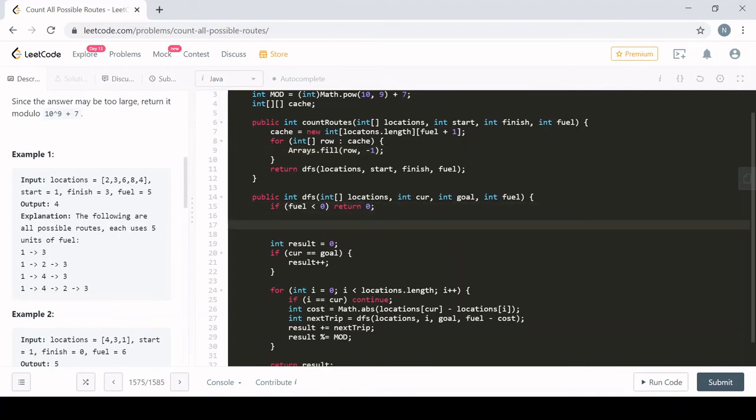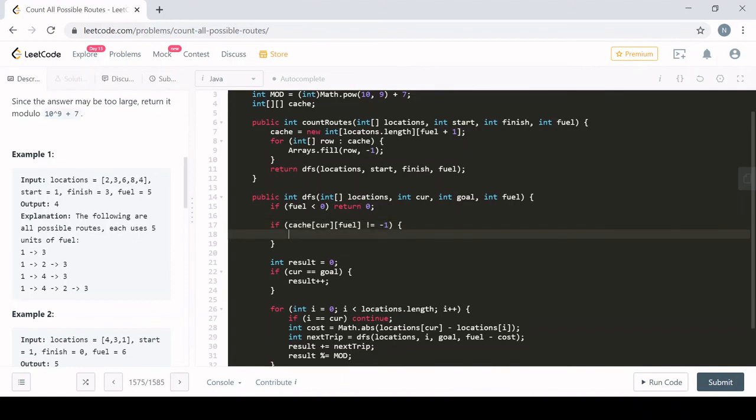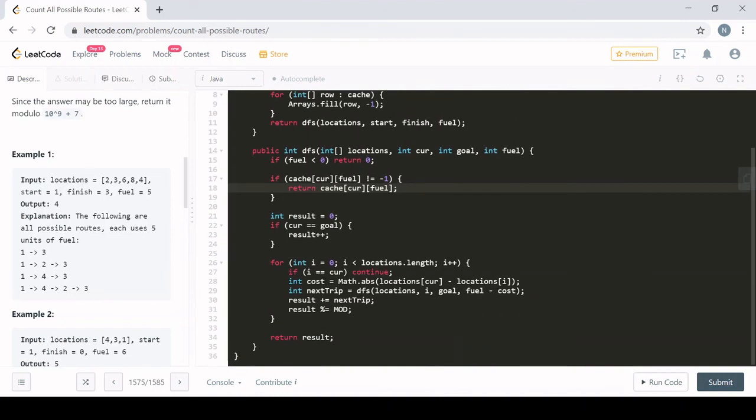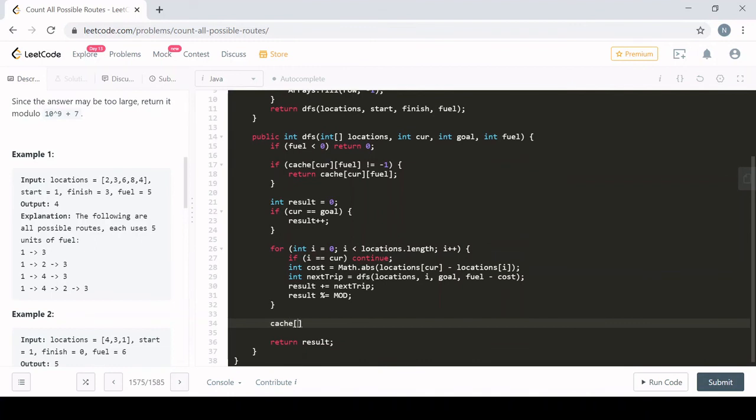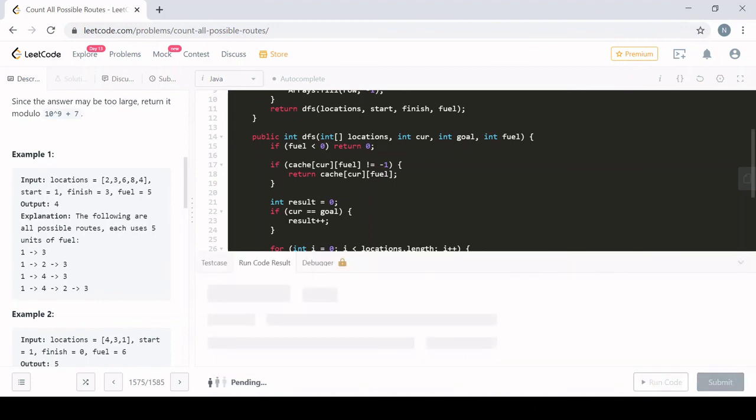So now, when I'm in my depth first search algorithm, after I've checked if it's a bad state, if I have a legitimate amount of fuel, I can check to see if I've computed this before. So if the current city I'm in and the fuel, with the amount of fuel I'm in, is not negative 1, that means I've calculated this answer before and I can just return it. If not, I need to actually do the computation. But then I want to remember the answer. So I will say, at that current city, with this amount of fuel, I will be that result. And let's just double check that this algorithm still works.